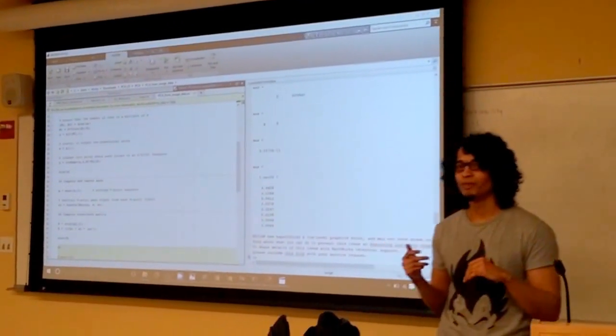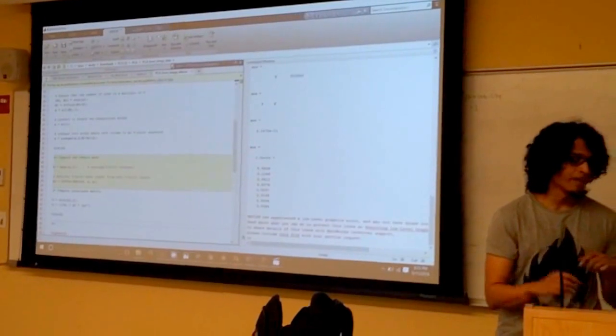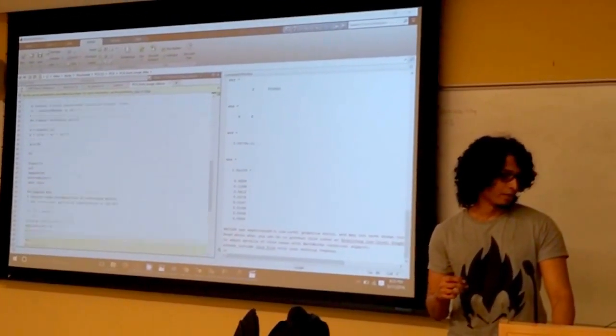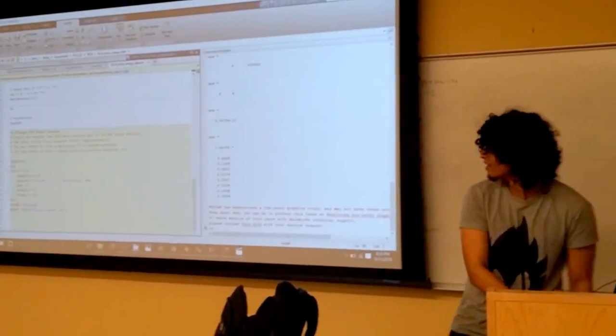I should mention that PCA only works on zero-mean datasets. If your data is not zero-mean, you have to subtract that, which is done over here. Then you compute the covariance matrix, you do the eigenvector decomposition, and you display the PCA basis vectors. Let's have a look.